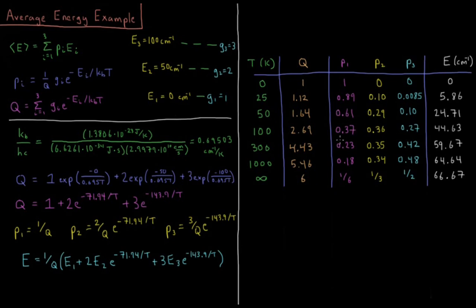At 100 Kelvin, they're almost all equal. The energy is 44 wavenumbers, almost up to E2. Then as the temperatures get higher, P1 goes down more. P2 starts going down as P3 starts going up.